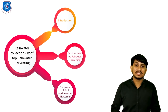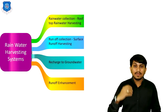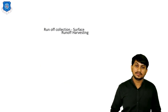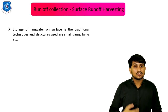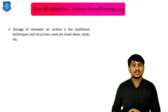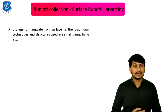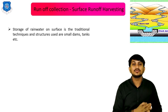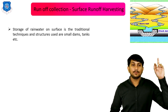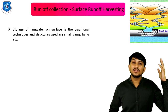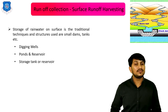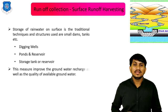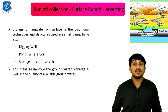The second method of rainwater harvesting is runoff collection or surface runoff harvesting. Storage of rainwater on the surface is a traditional technique, and structures used include small dams, tanks, etc. This figure shows various runoff collection techniques and structures related to surface runoff harvesting. A check dam is the structure used for surface runoff harvesting. There are also various other structures like dug wells, ponds and reservoirs, and storage tanks. This improves the groundwater recharge as well as the quality of available groundwater.